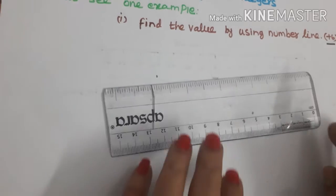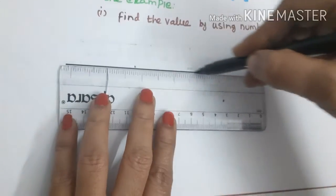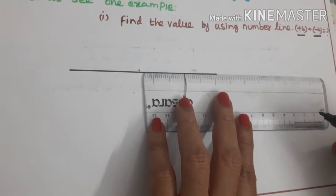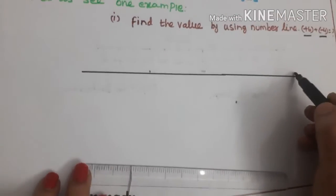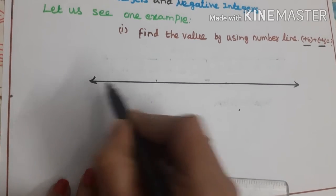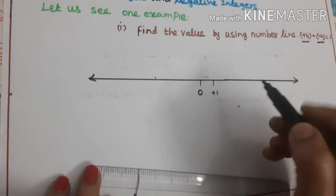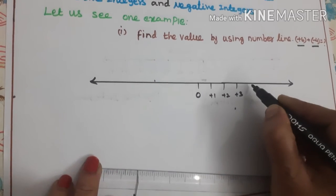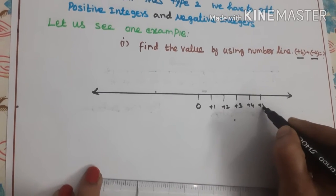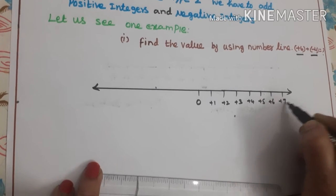Firstly, we will draw a number line. The number line contains positive integers and negative integers along with 0. Positive 2, positive 3, positive 4, positive 5, positive 6, and positive 7.